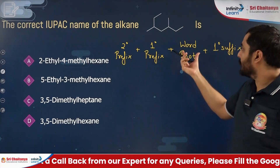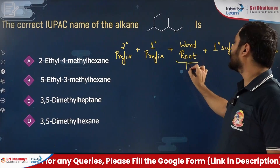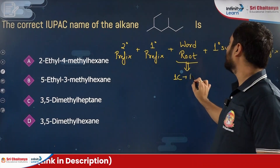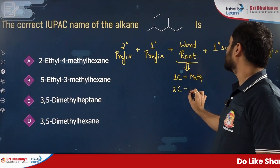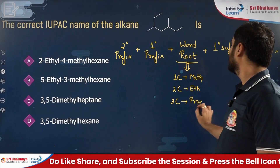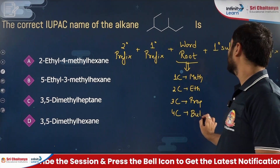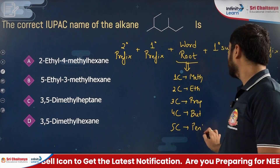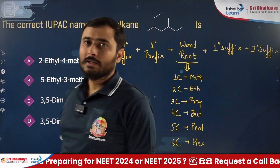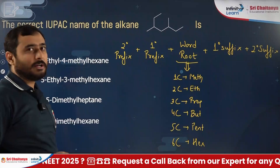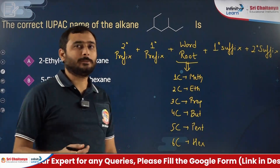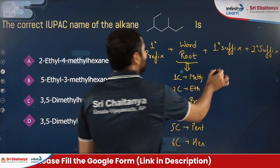The word root indicates the total number of carbon atoms in the parent chain. For example, one carbon — meth, two — eth, three — prop, four — but, five — pent, six — hex, seven — hept. The parent chain is the longest continuous chain of carbon atoms in the alkane.